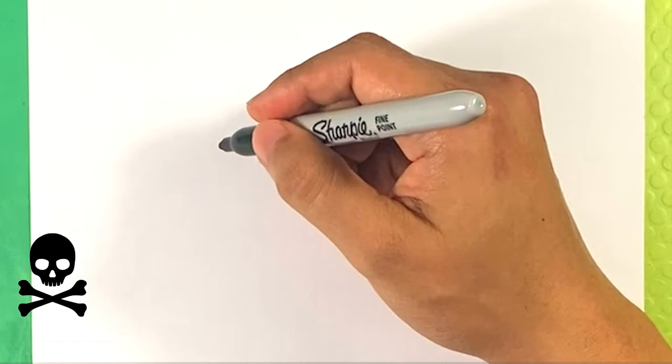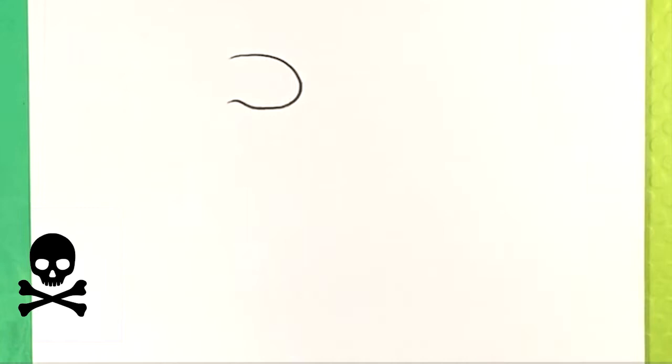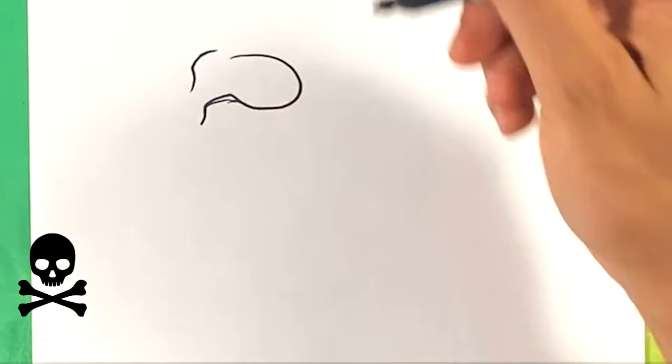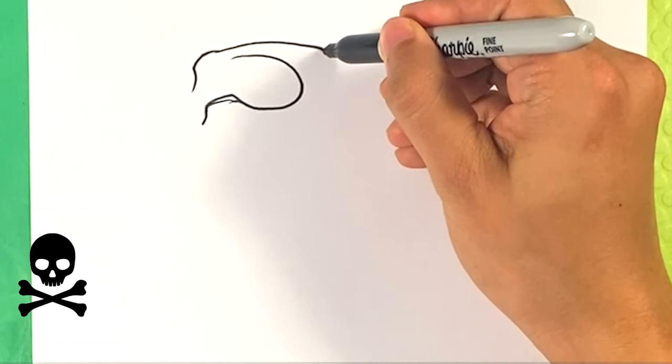I'm going to go right here and draw a kind of C shape almost. It's going to be the eye, by the way. Curve up here, down. Over here, I'm going to pull a line for the back of the skull and pull forward down over here.